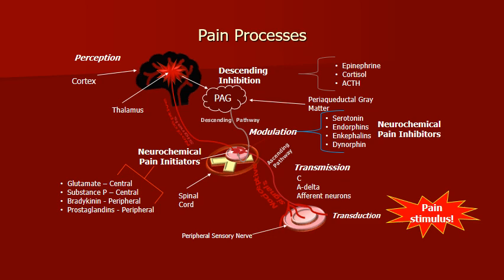Pain sensation is modulated by a variety of neurotransmitters or neurochemicals that are either excitatory — meaning that they initiate pain — or inhibitory — meaning that they inhibit or stop pain. Some of the excitatory neurotransmitters include glutamate, substance P, bradykinin, and prostaglandins. Some of the inhibitory neurotransmitters include serotonin, endorphins, enkephalins, and dynorphin.